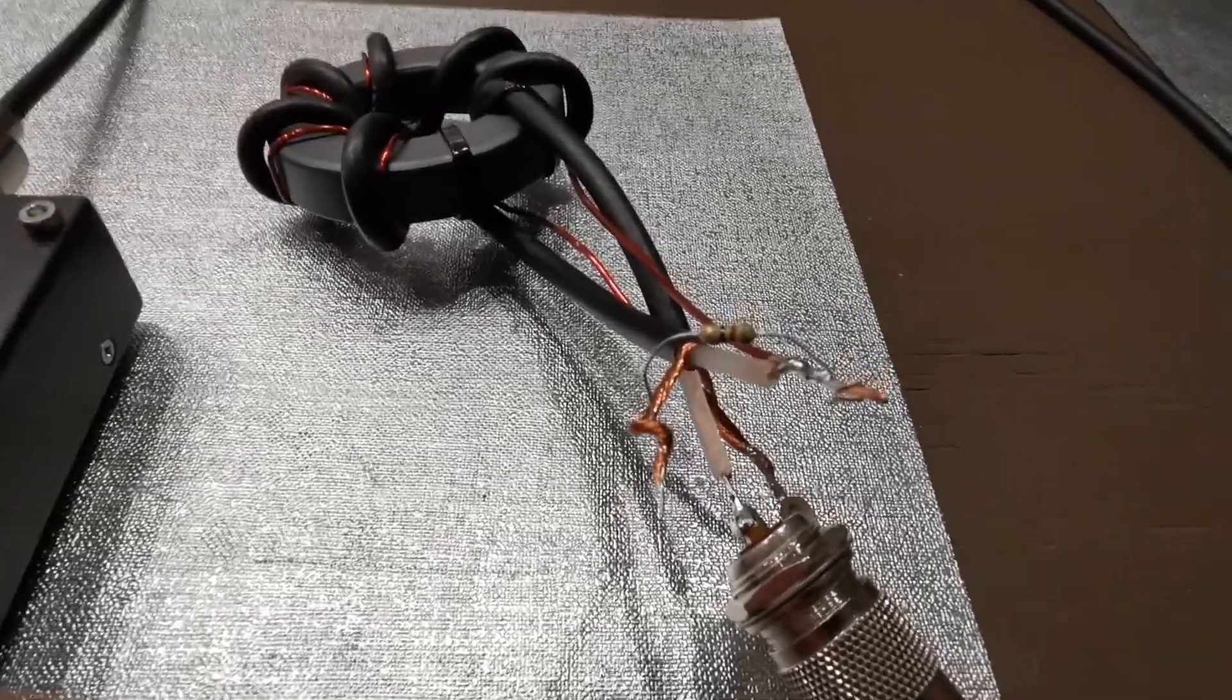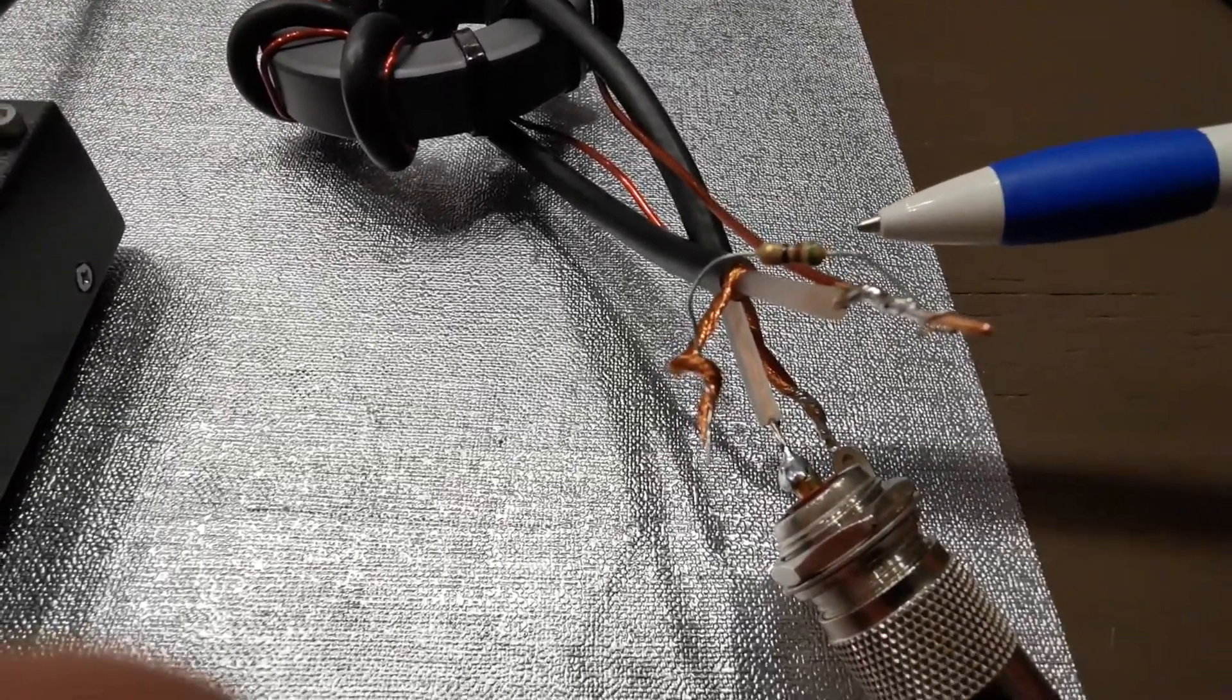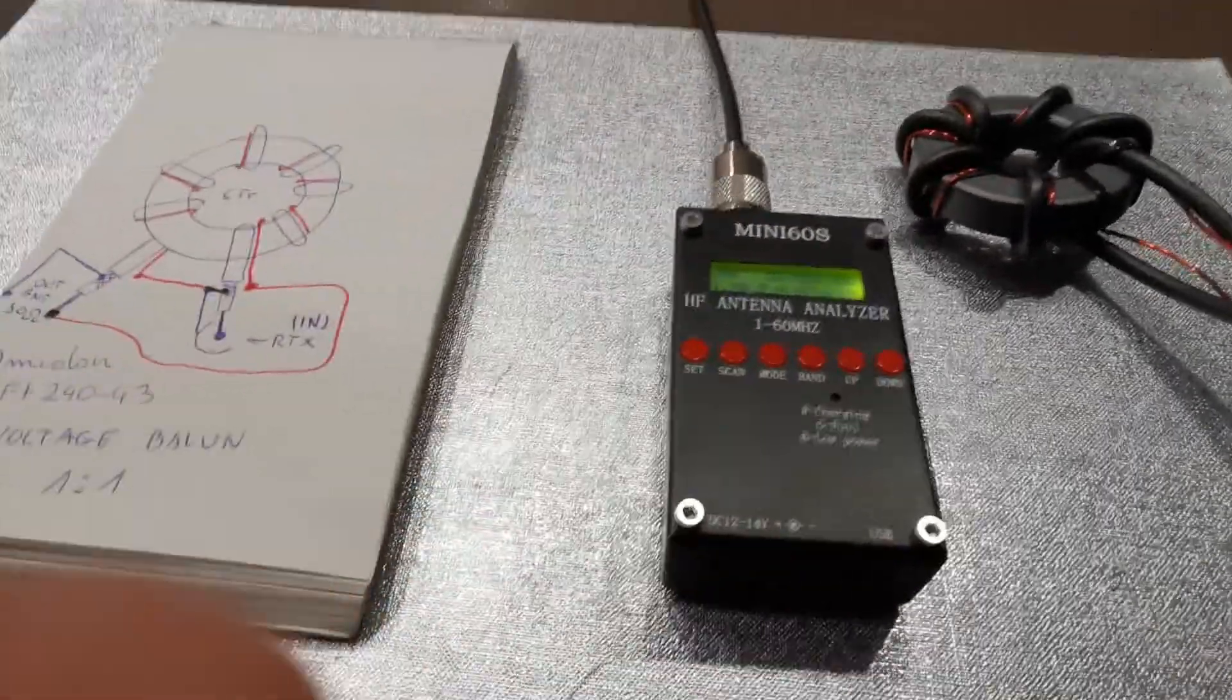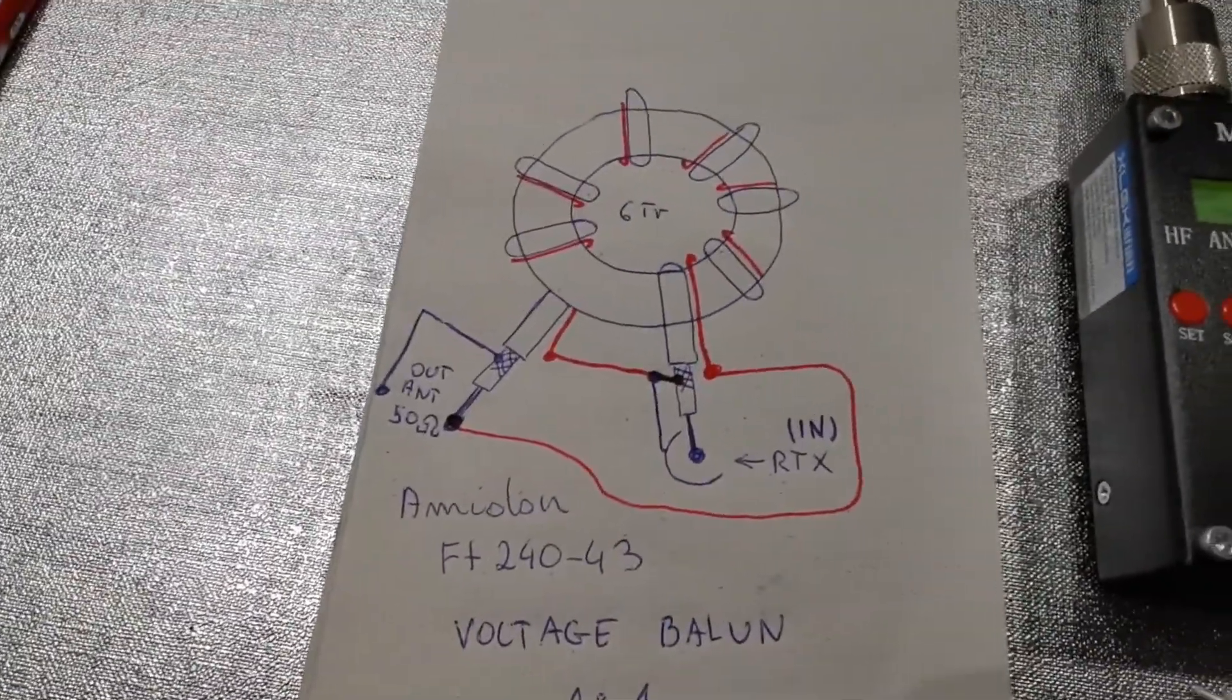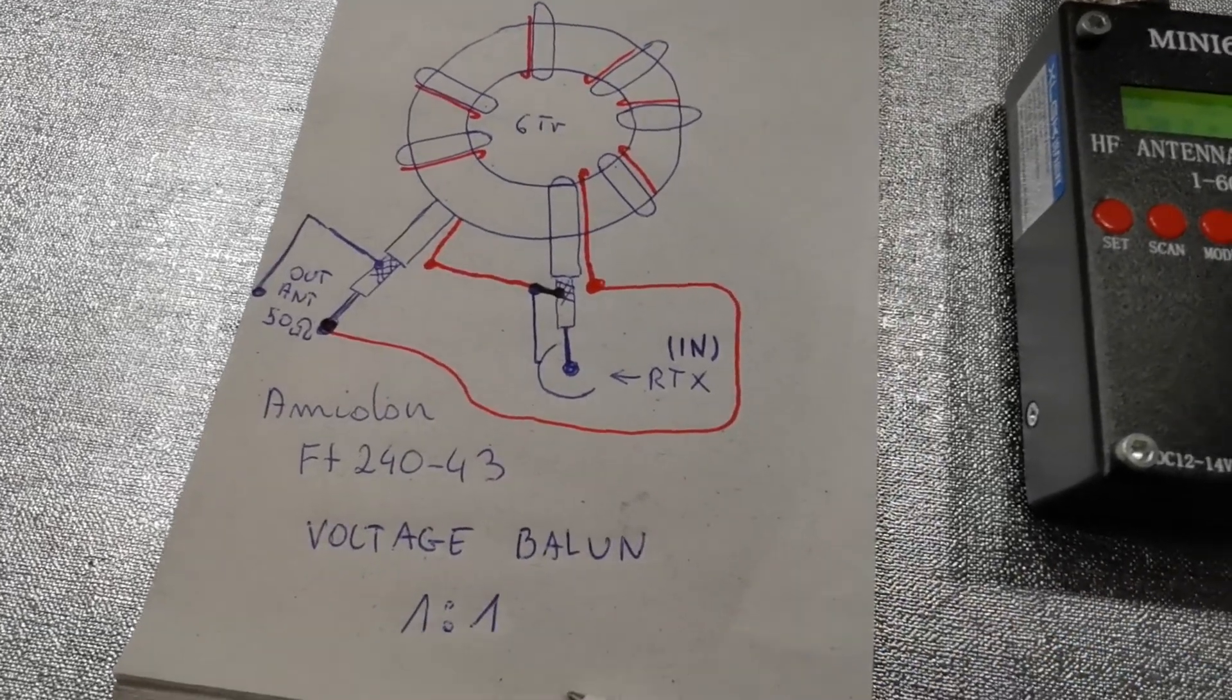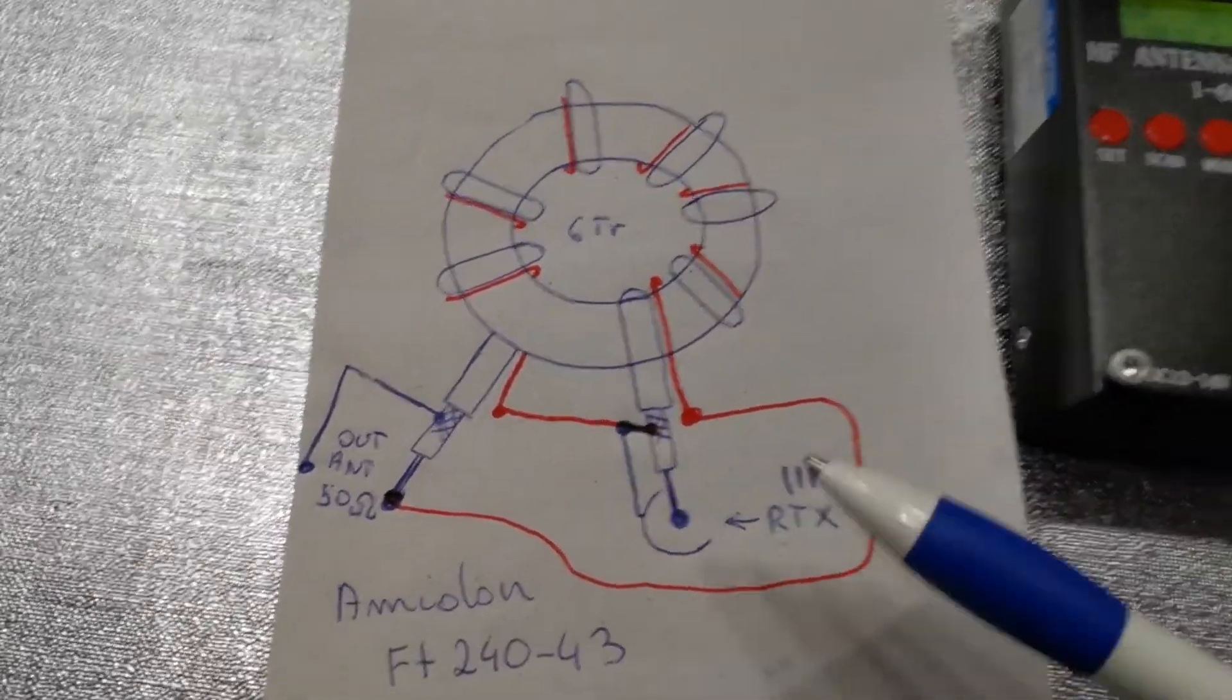I have for my test a 50 ohm resistor. I have made also for you a simple drawing. This is the Amidon 240-43 voltage balun, 1:1. When you look at the drawing and you make exactly the copy, you can get a great 1:1 balun.